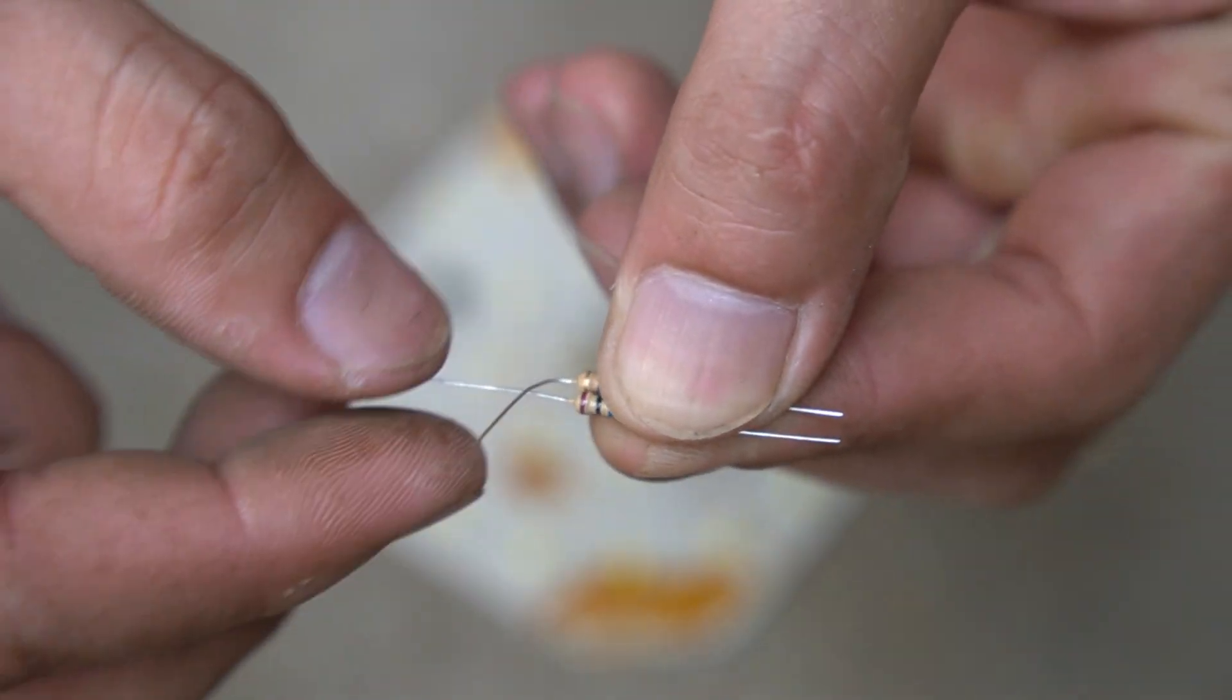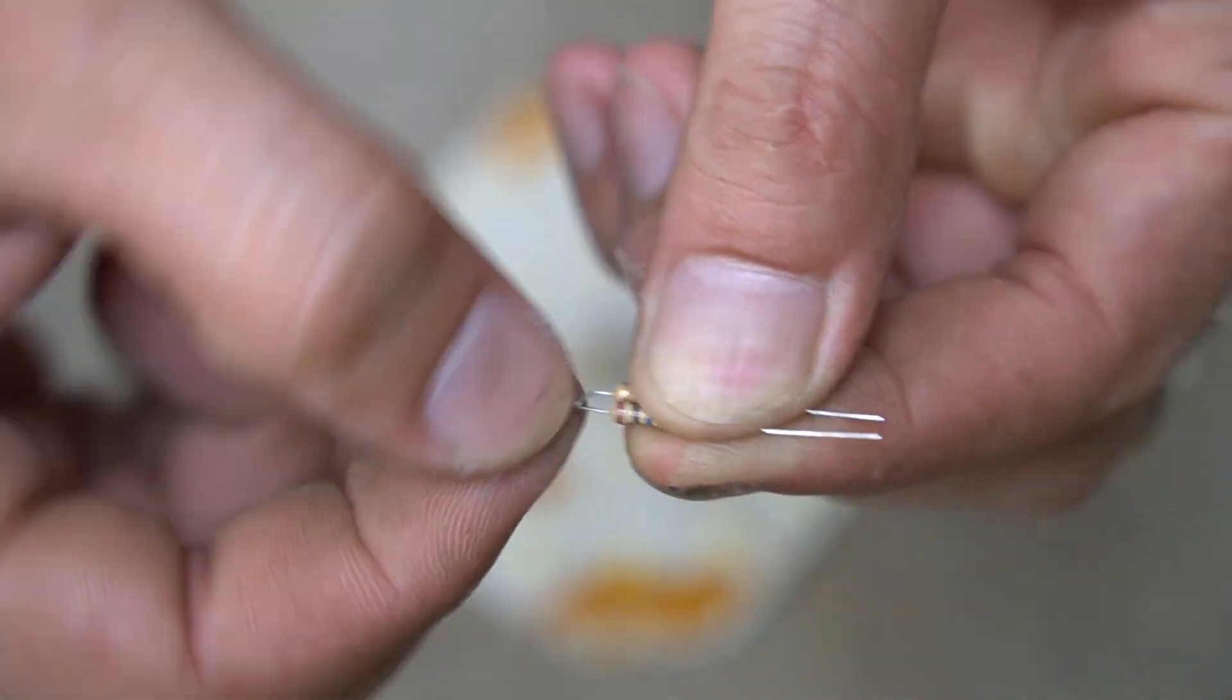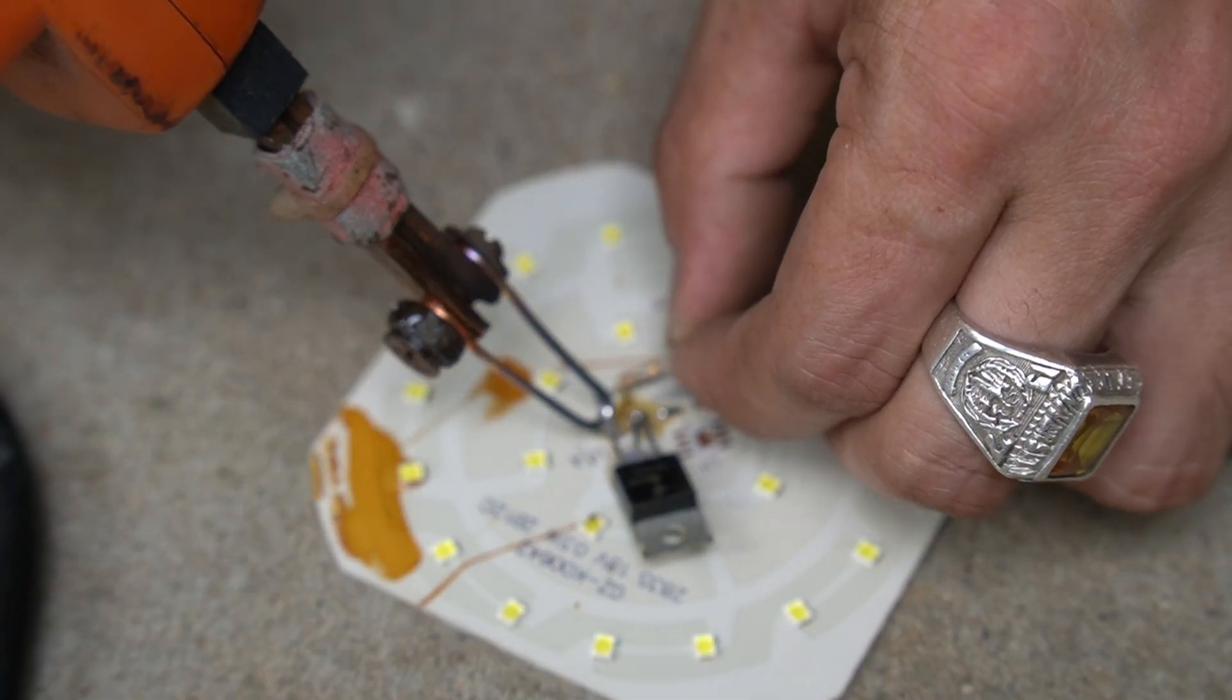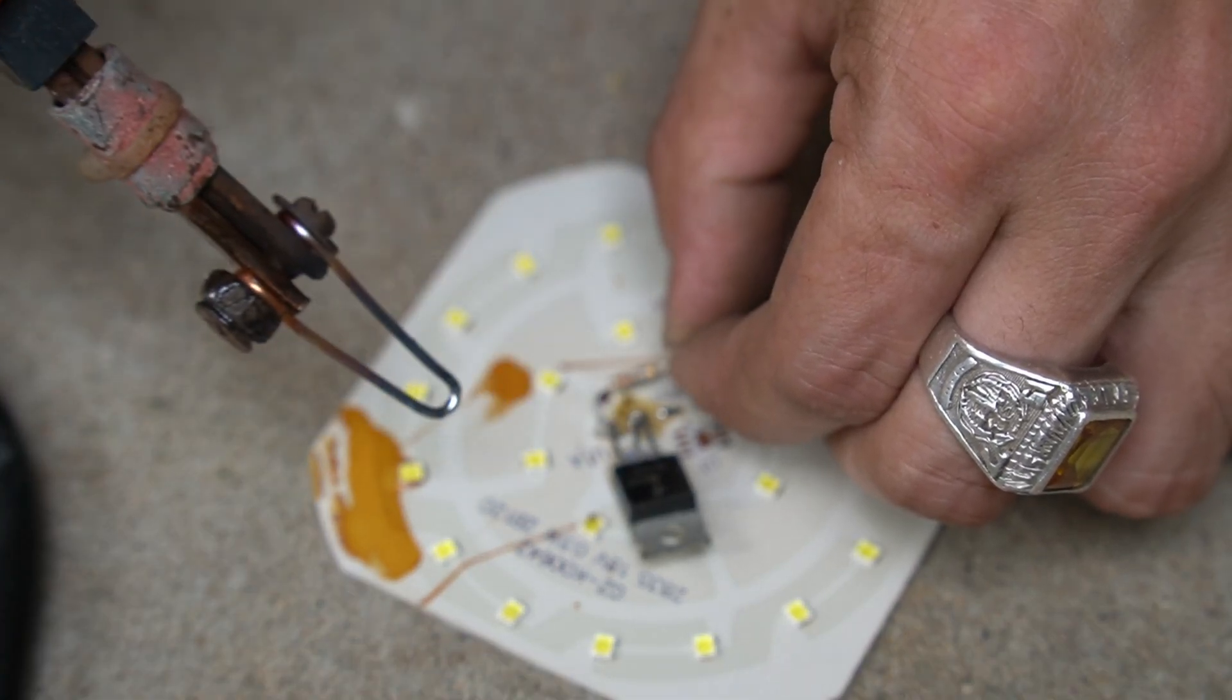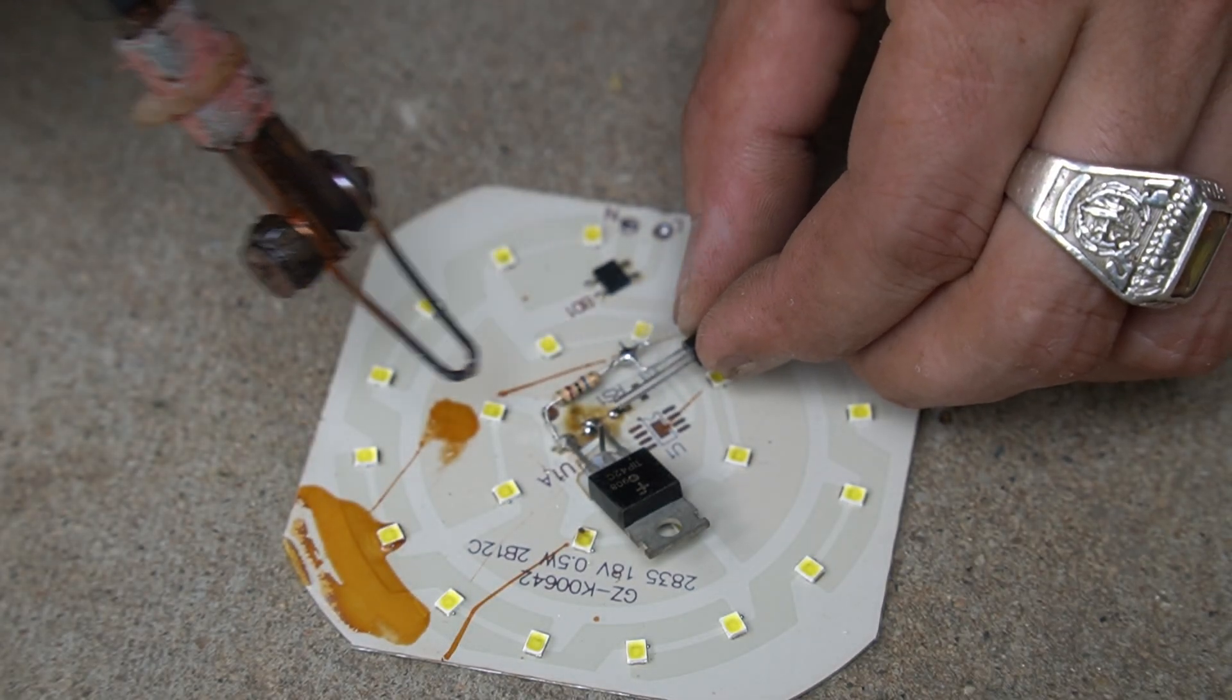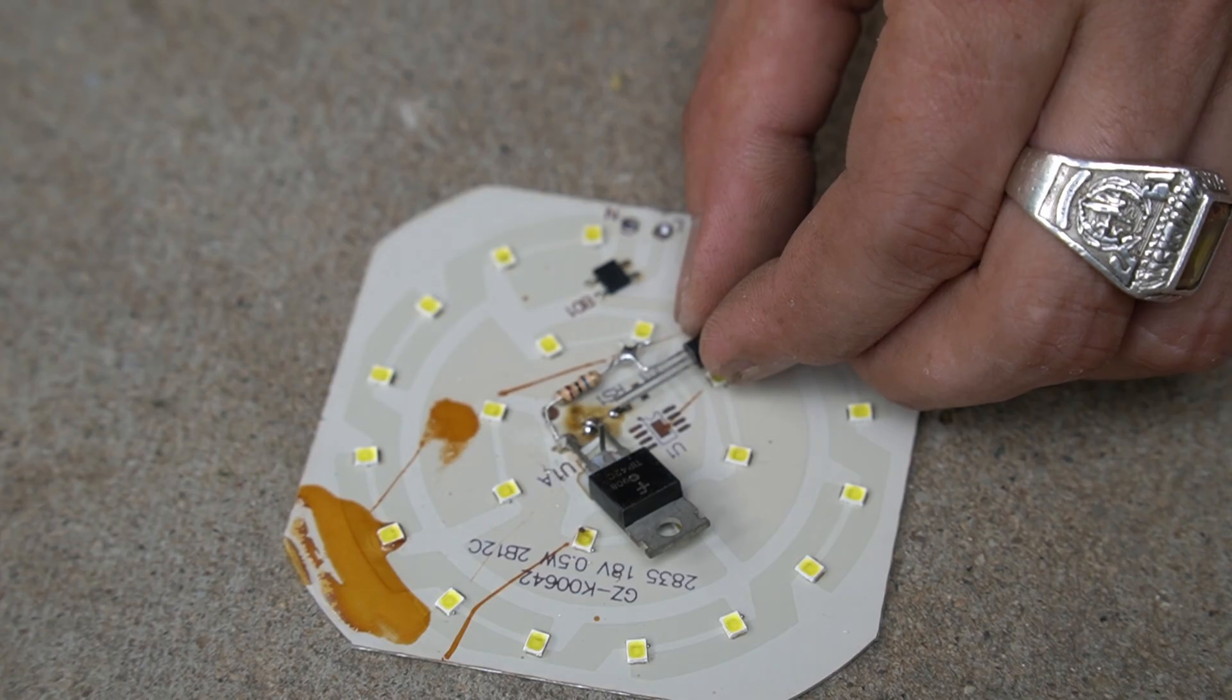Next I took two small resistors and wound them together. I soldered one end of the resistor to one leg of the mosfet. The other end I soldered to one leg of the diode.